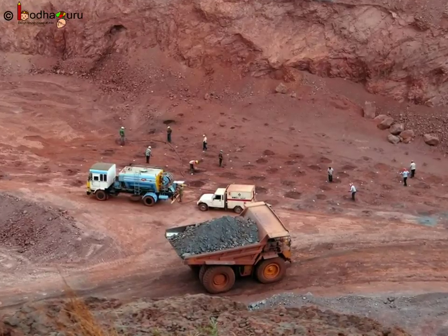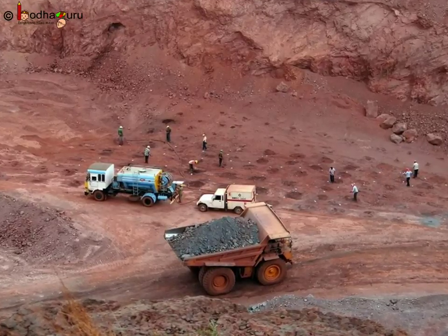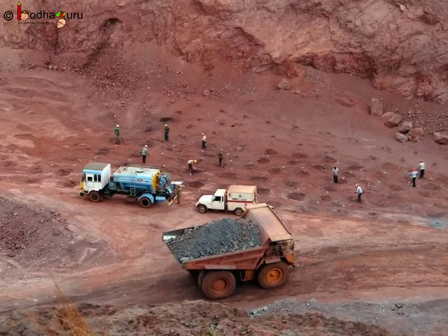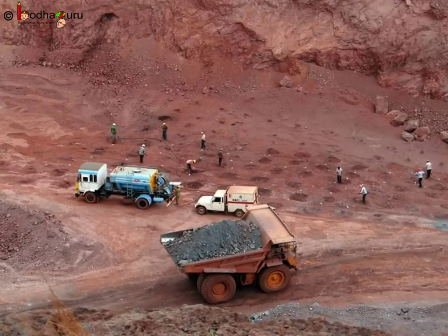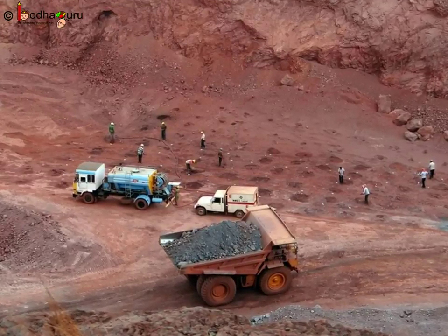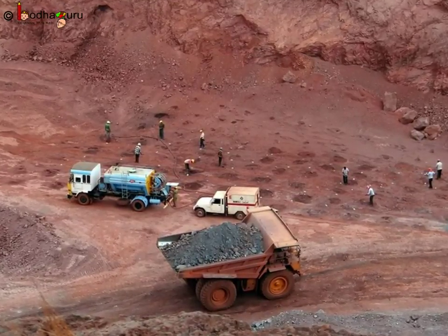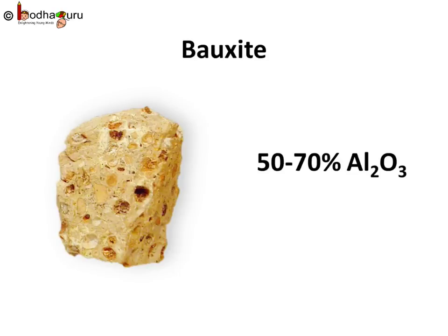So we need to separate the main compound from the ore and then obtain the metal from the compound through a series of chemical reactions. For example, bauxite is an ore of aluminium which contains 50–70% of aluminium oxide.